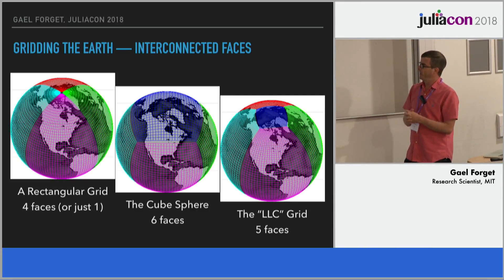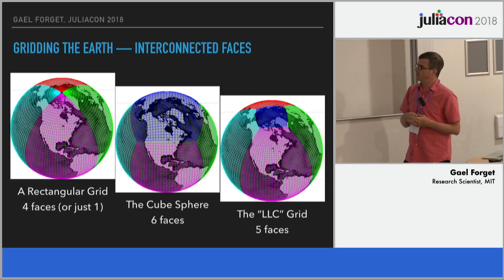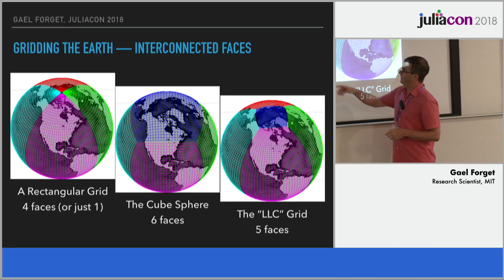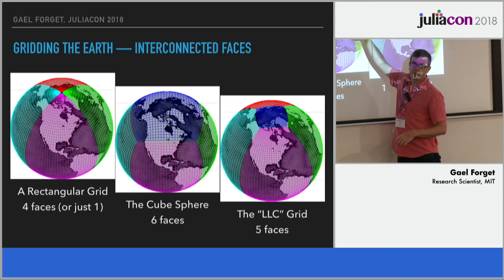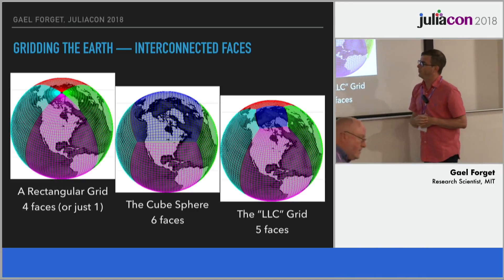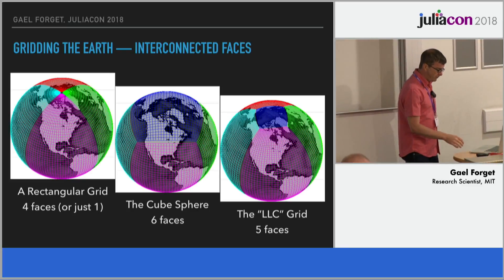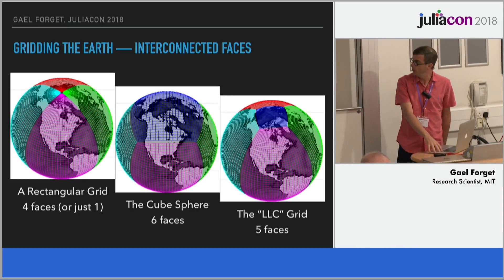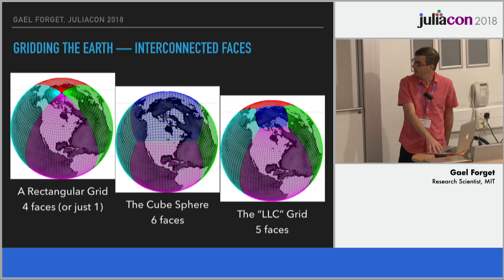So we have three very different types of objects, and one of the goals here is to make something uniform that users can leverage to easily manipulate output on those three types of grids. Before I move on, I'd like to stress that one of the essential aspects is to represent the connection between the different faces, because typically stuff doesn't stop at the edges — we want ways to communicate between the different regions.